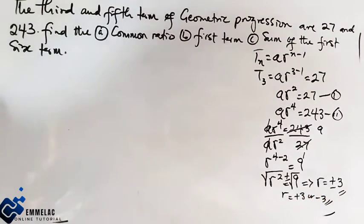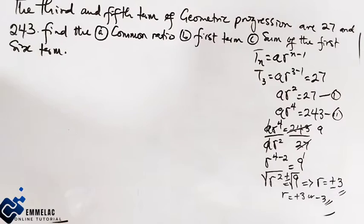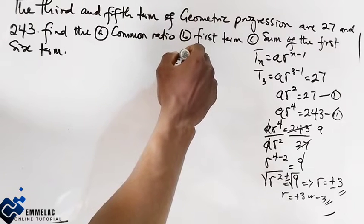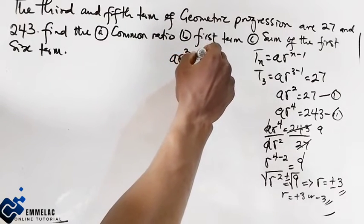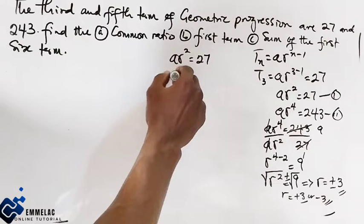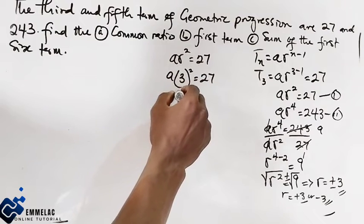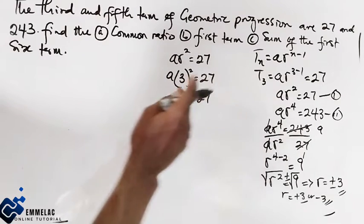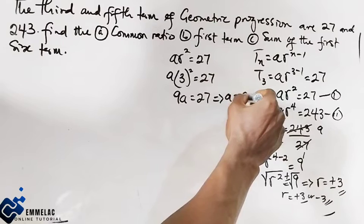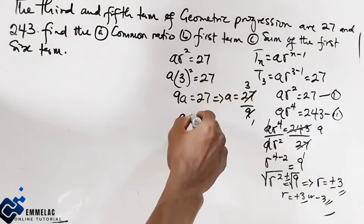Now let's find the value of A. Using equation 1 with R equals positive 3: AR² equals 27, so A times 3 squared equals 27, giving us 9A equals 27. Dividing both sides by 9, A equals 27 over 9, which gives A equals 3.